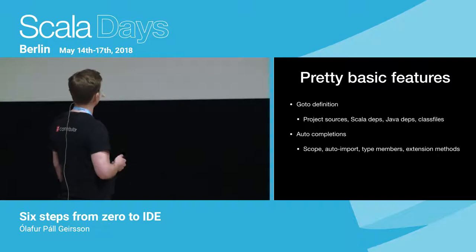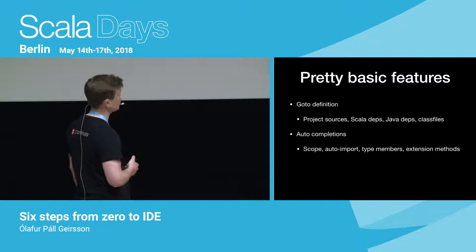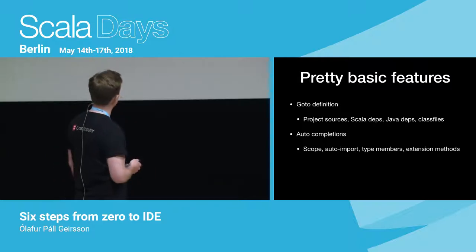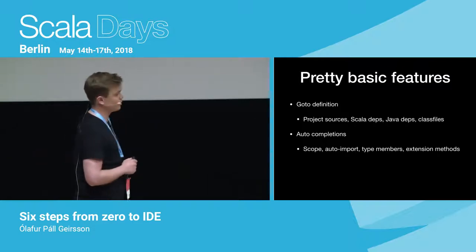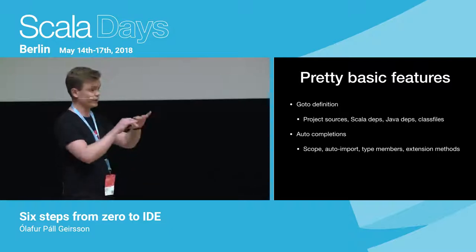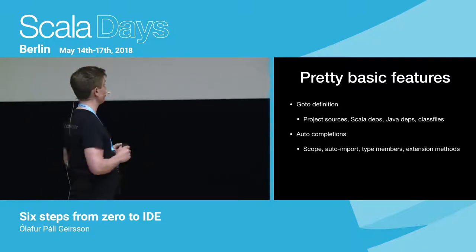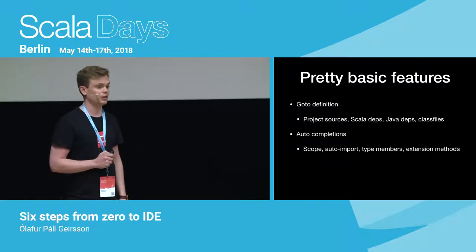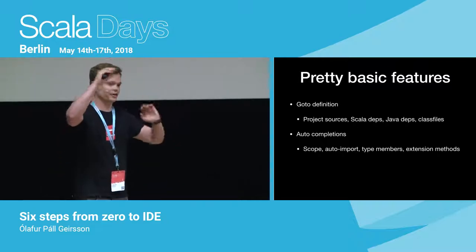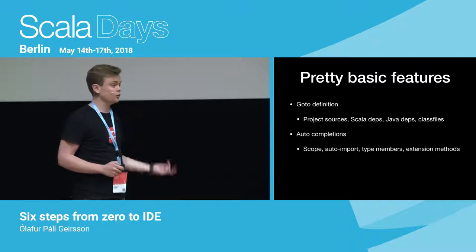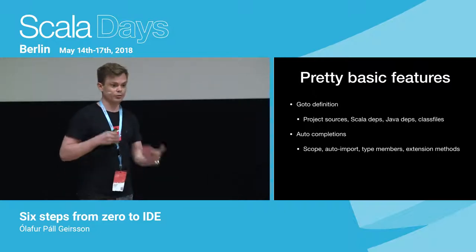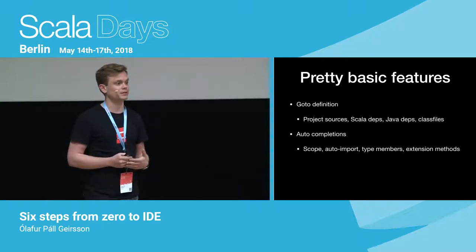So GoToDefinition is not just one feature — it's actually a group of features, and according to many people it's a pretty basic feature. The second important feature you'd expect is completions. They're a great way to navigate a library, know what you can write next, and save a couple of keystrokes. And just like with definition, completions are not a single feature either. When you complete, you can complete something from scope — if you're writing an identifier in scope. But if it's not in scope, you'd expect it to auto-import it from the classpath. And then we also want type members, which is when you do a dot and it lists out the methods of a class.